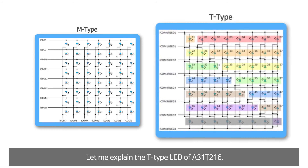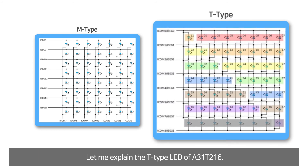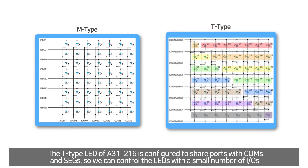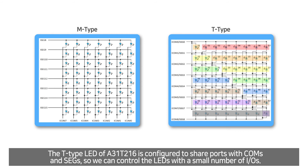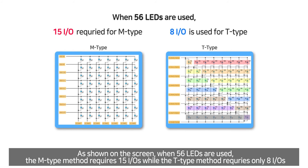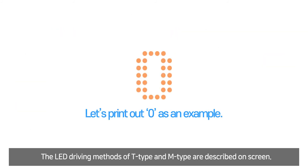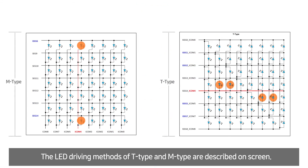Let me explain the T-type LED of A31T216. The T-type LED of A31T216 is configured to share ports with COM and SAG, so we can control the LEDs with a small number of IOs. As shown on the screen, when 56 LEDs are used, the M-type method requires 15 IOs while the T-type method requires only 8 IOs. The LED driving methods of T-type and M-type are described on screen.